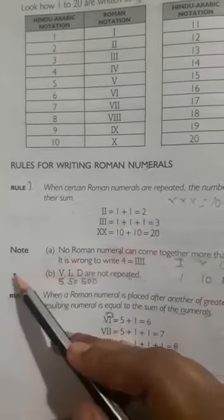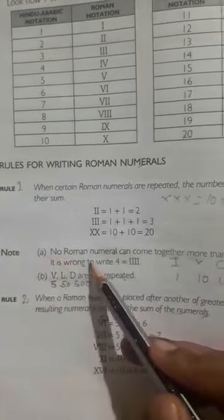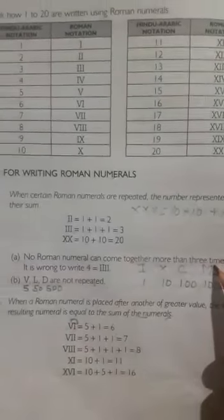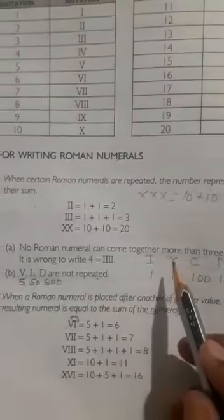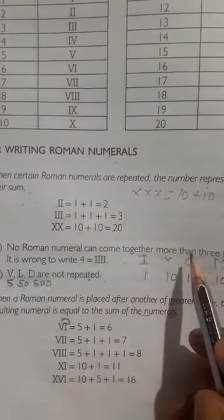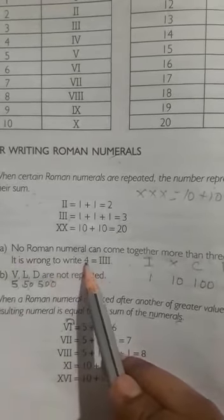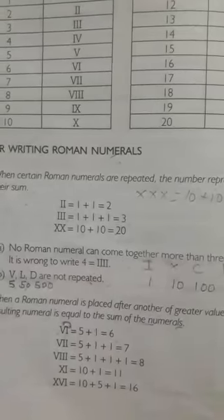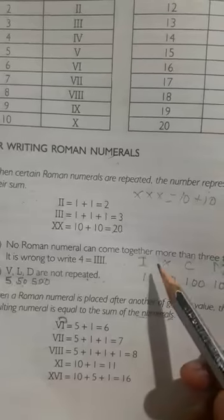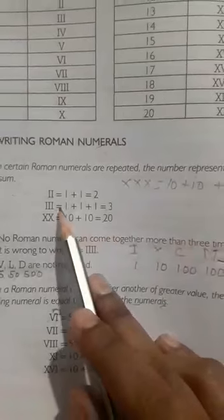But you have to note that no Roman numeral can come together more than 3 times. No symbol can be repeated more than 3 times. It is wrong to write IIII. Maximum, we can repeat 3 times.